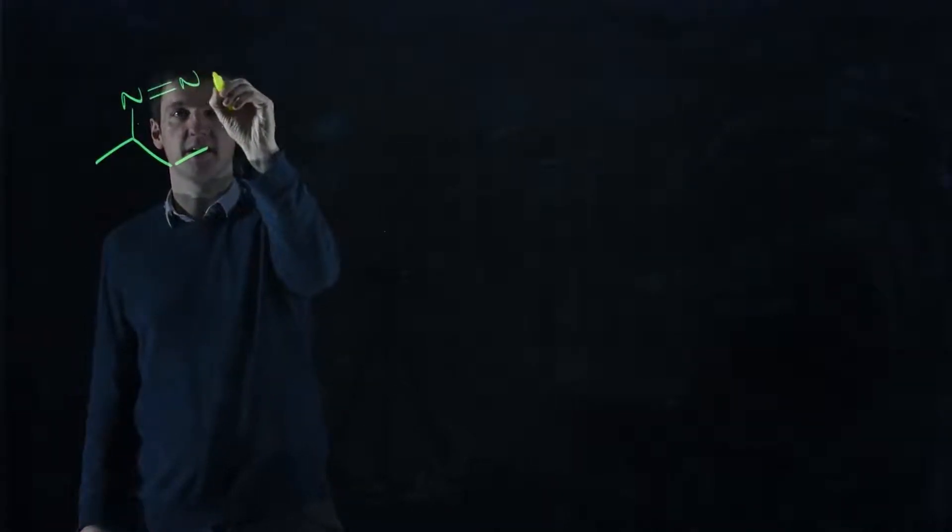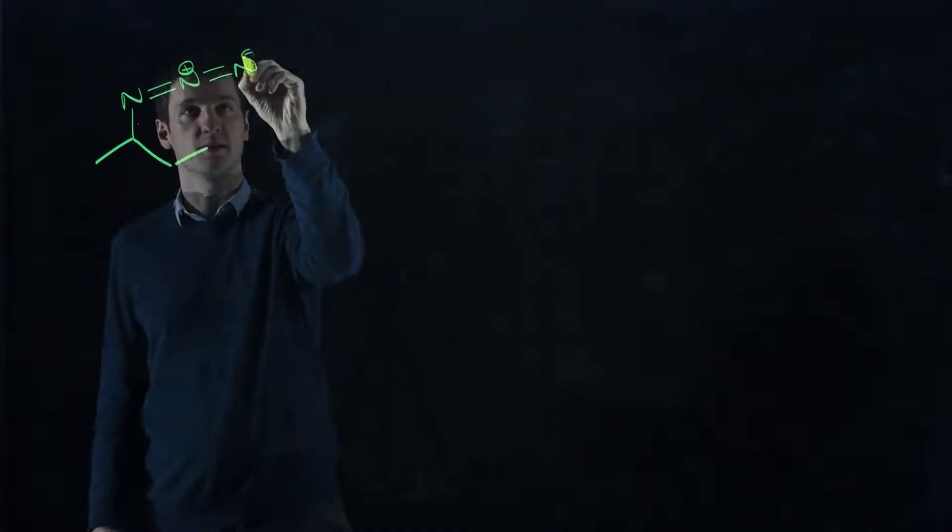Supposing we have this as our azide, so N double bond N double bond N, which means this one will have a positive charge, this one will have a negative charge.